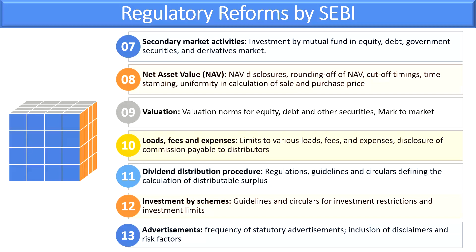SEBI has regulations, guidelines, and circulars defining the calculation of distributable surplus. There are also provisions related to investment restrictions and investment limits, which we will see in upcoming sections. SEBI has laid down guidelines for the frequency of statutory advertisement, inclusion of disclaimers, and risk factors — which we will see in the next slide.